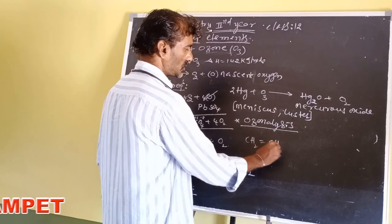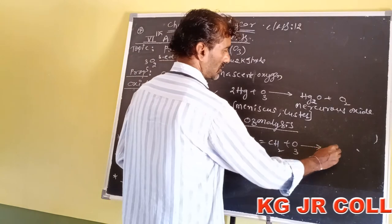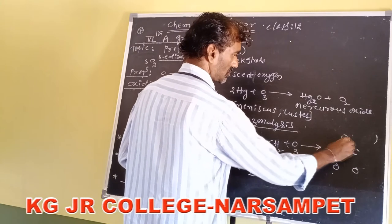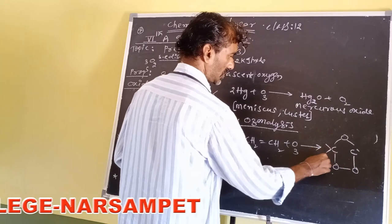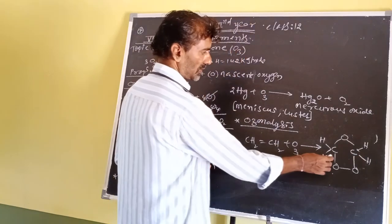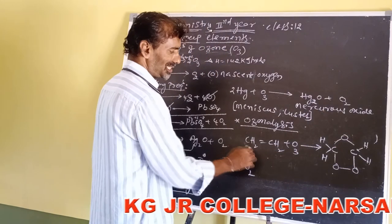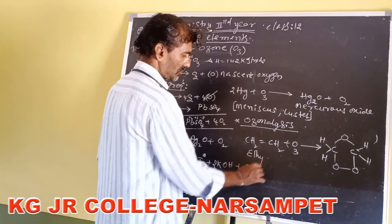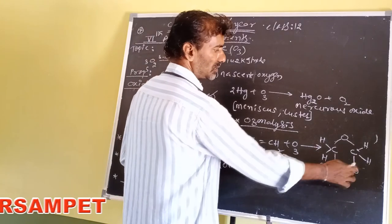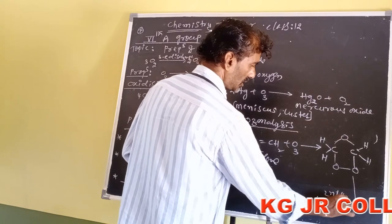Example: ethylene (CH₂=CH₂) plus ozone gives ethylene ozonide. Ethylene ozonide undergoes reduction by H₂O and splits into two parts, each giving HCHO (formaldehyde), which has two hydrogens, one carbon, and one oxygen with a C=O double bond.